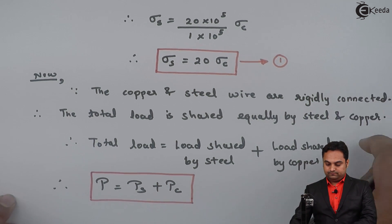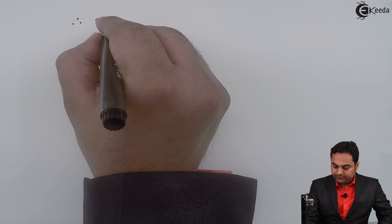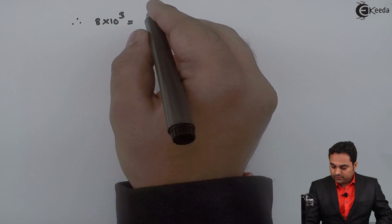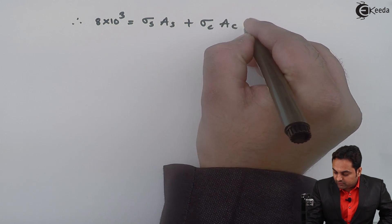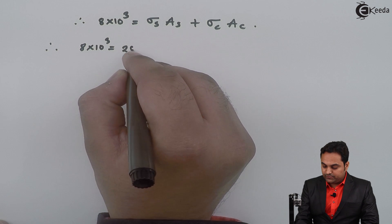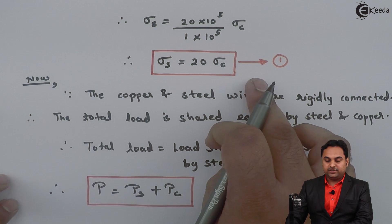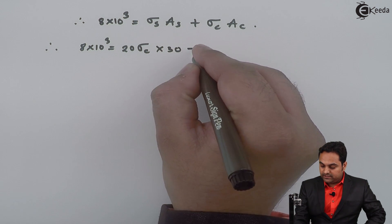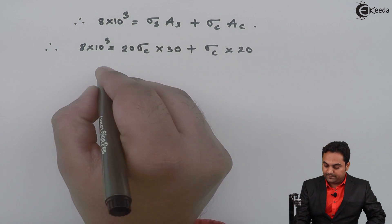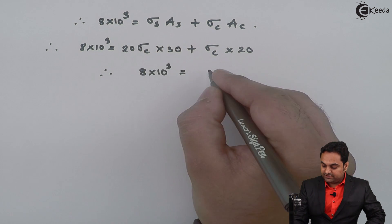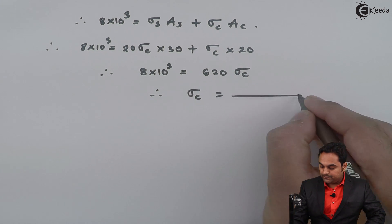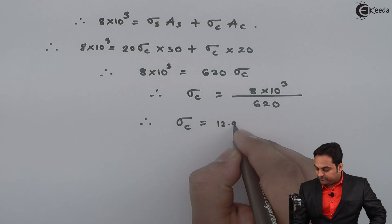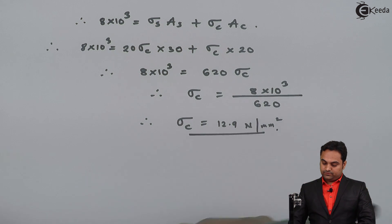The total load is 8 into 10 raised to 3 Newton. Load equals stress into area, so: stress in steel into area of steel plus stress in copper into area of copper. Substituting equation 1, stress in steel is 20 sigma C, area of steel is 30 mm square, and area of copper is 20 mm square. So 8 into 10 raised to 3 equals 20 sigma C times 30 plus sigma C times 20, which gives 620 sigma C. Therefore sigma C equals 8000 divided by 620, which comes out to be 12.9 Newton per mm square. This is the first answer.